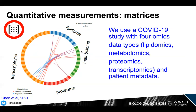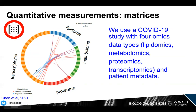With this, we found correlations between features across each omics data block. The red lines show strong positive correlation and the blue lines show strong negative correlation, with each individual data block shown in a different color.